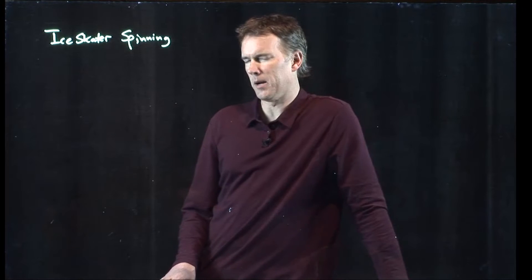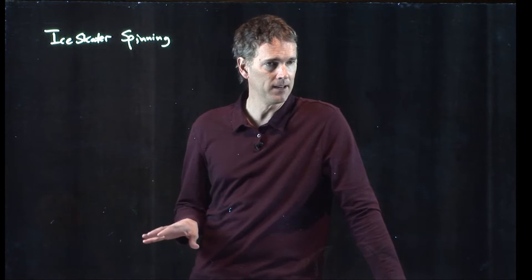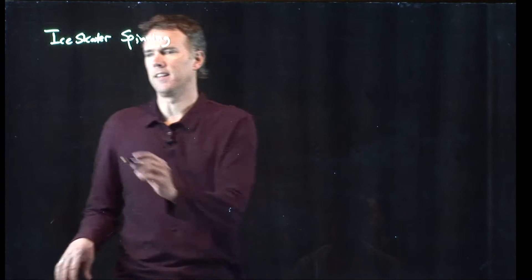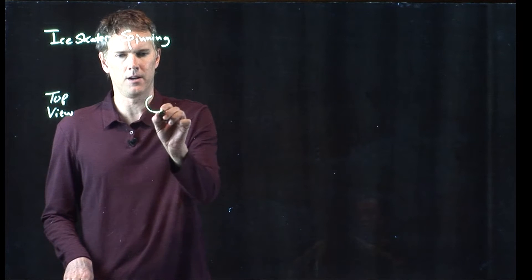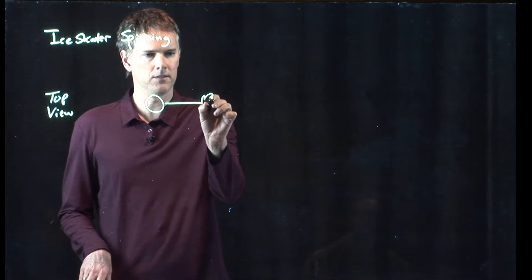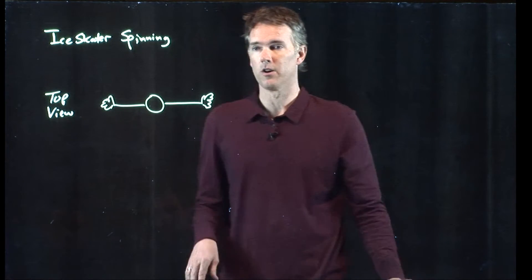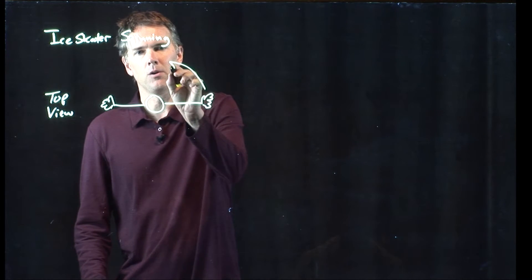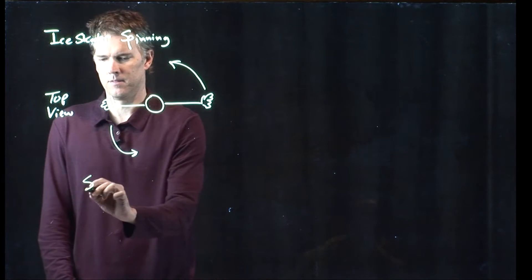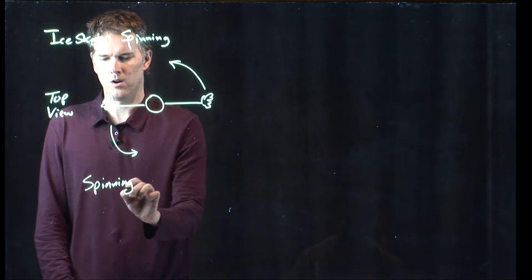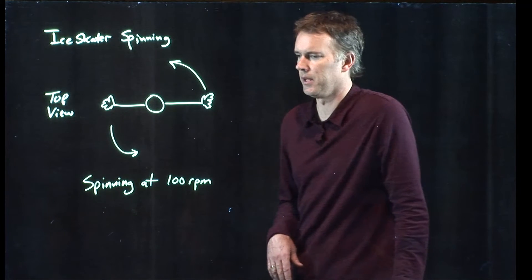Hello class. Let's take a look at a problem that might have relevance to your homework. This is a problem of an ice skater spinning. Let's take a top view picture of this ice skater. Here's Brian Boitano's head and there are his hands — really ridiculously large hands, but that's okay. He's spinning, going around like this. Let's say that he is spinning at 100 RPM, which ice skaters can do.